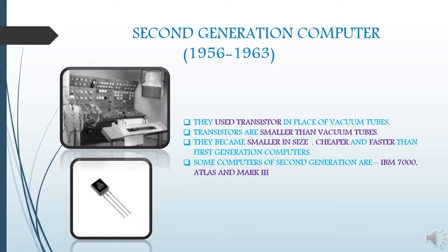The second generation computers used transistors instead of vacuum tubes. As transistors are smaller than vacuum tubes, the computers became much smaller in size. They also became cheaper and faster. Some computers of the second generation are IBM 7000, ATLAS, and Mark III.